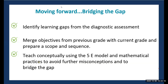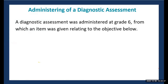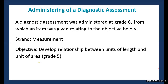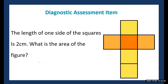We are currently administering the diagnostic assessment. Here is a scenario: it was administered at grade 6, so the objectives would have been taken from grade 5. The strand we're looking at is measurement, and the objective is to develop the relationship between units of length and units of area. This is a tier two objective at the DOK level 2. The item says: the length of one side of the squares is two centimeters — what is the area of the figure?